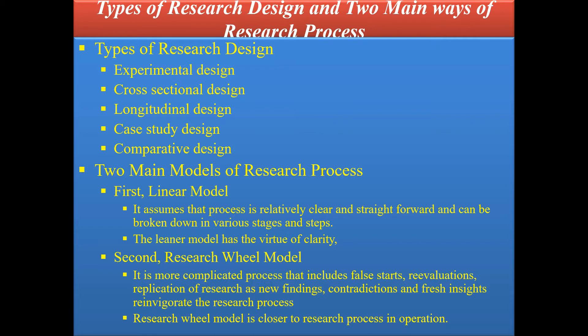The research wheel model is a more complicated process that includes false starts, re-evaluations, replication of research, new findings, contradictions, and fresh insights that re-invigorate the research process. If a researcher confronts something new, it is included and handled within the research. The wheel model is closer to the actual process and operation.